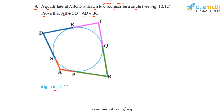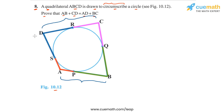Now, if you consider AB and CD and observe the parts within these two segments, you have AP, BP, CR, and DR. And if you consider the sides AD and BC, they have the parts AS, DS, BQ, and CQ.